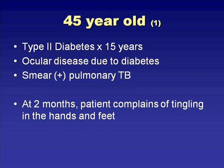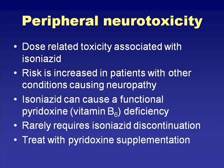The same patient—ocular disease attributed to diabetes—presents at two months with tingling in the hands and feet. Peripheral neurotoxicity is a dose-related toxicity of isoniazid. The mechanism is that isoniazid causes a functional pyridoxine deficiency. It rarely requires isoniazid discontinuation and is generally treated with pyridoxine supplementation. Patients with underlying risk factors—diabetes, alcoholism, or pregnancy—should receive pyridoxine supplementation at the initiation of therapy, rather than waiting for symptoms to develop.